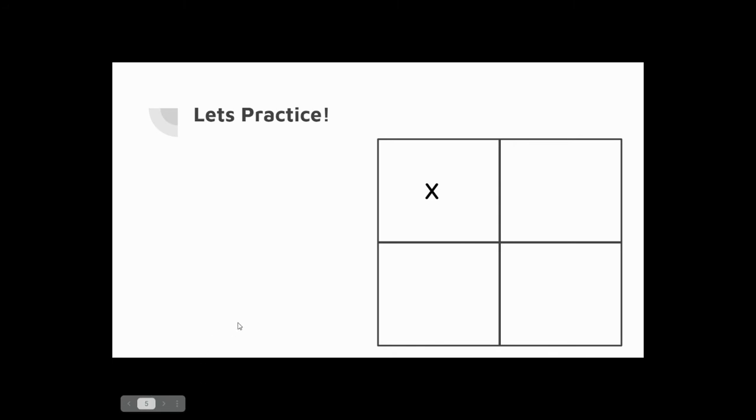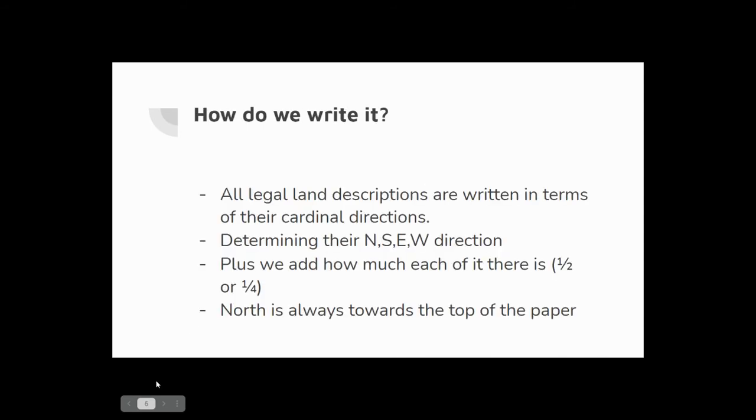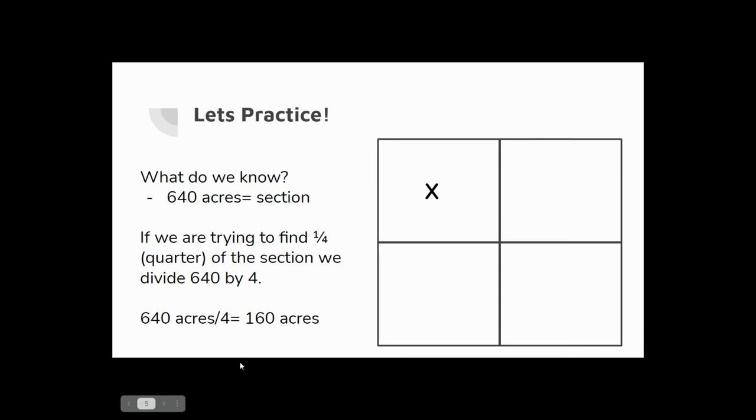So let's practice. What do we know? Well, we know that a section is 640 acres, right? We just went over that. So this whole outside box here is 640 acres. And in this example specifically, we've broken that big square, that 640 acres, down into four equal quadrants. So I'm asking you to find in this example, how many acres is the X worth? So if we take 640 acres, we know that this X is occupying one fourth, right? Four boxes. The X is one fourth of the whole thing. And so therefore we can take 640 acres divided by four equal parts and we get 160 acres. So this X would represent 160 acres.